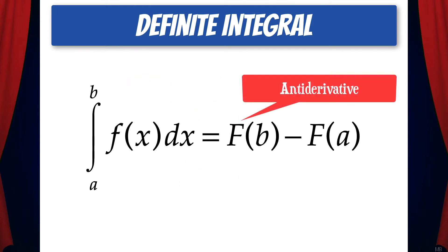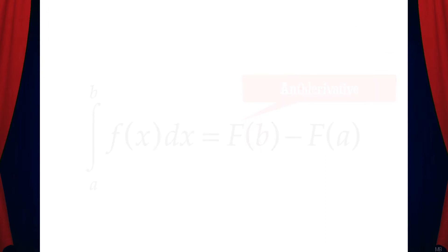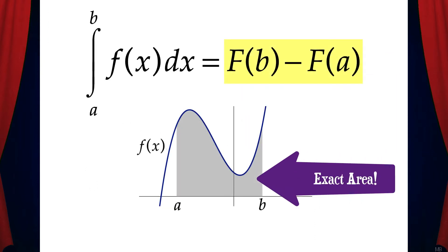Capital F is the antiderivative of little f of x. And capital F of b minus capital F of a gives the exact area under little f of x from a to b.